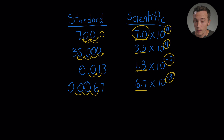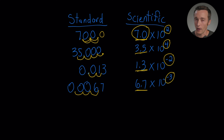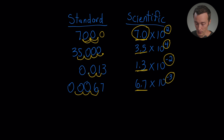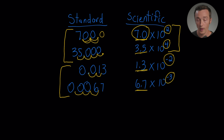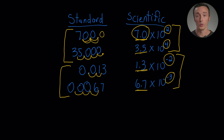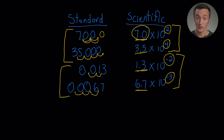Instead of memorizing which direction is negative or positive, just use common sense. Big numbers — like 700 or 35,000 — have a positive exponent. Small numbers — numbers less than one, like the little decimal-point ones — have a negative exponent. Big numbers have positive exponents; small numbers have negative exponents.